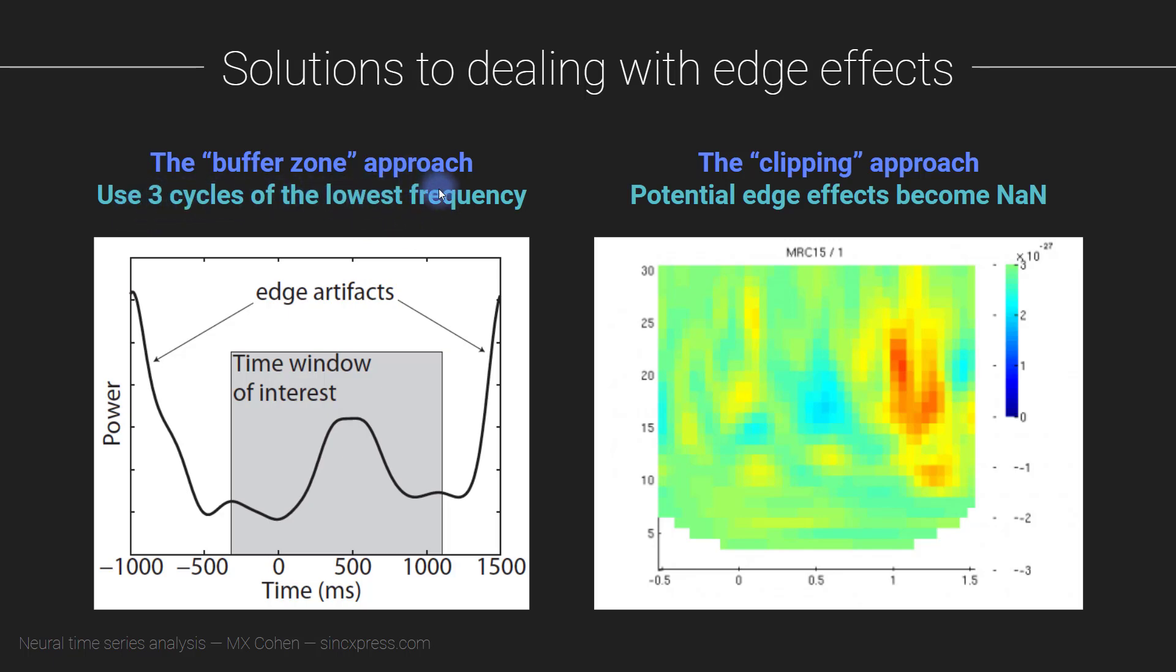So for example, if the lowest frequency that you are extracting is five hertz, then one cycle at five hertz is 200 milliseconds. So three cycles at five hertz is 600 milliseconds.